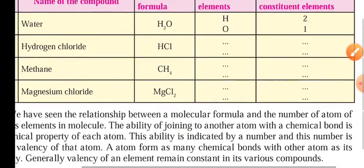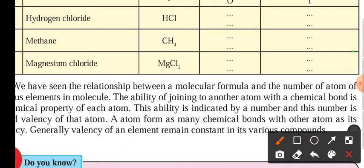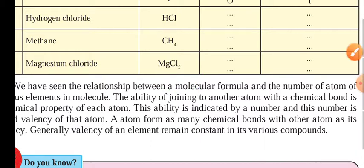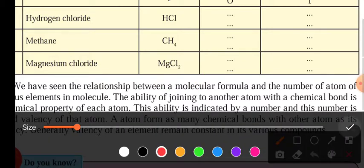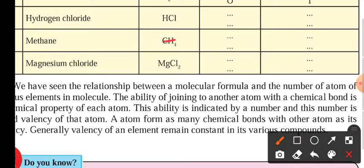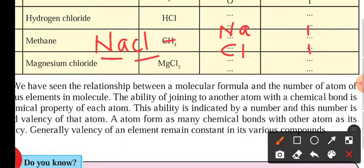Suppose if I am taking one more example — sodium chloride, NaCl. The component or constituent elements are sodium and chlorine, and both are one. Because if a number is not written along with the atoms, then it means one atom is present.